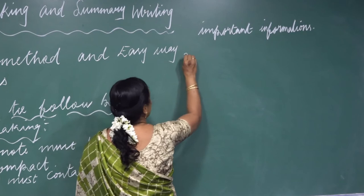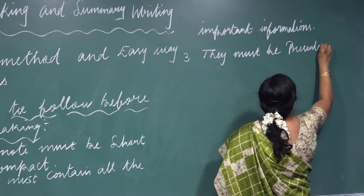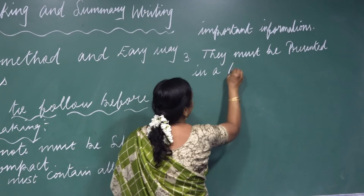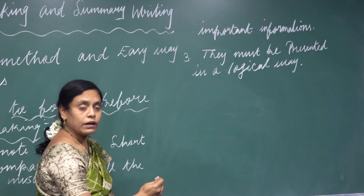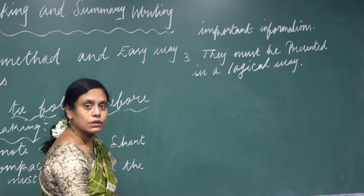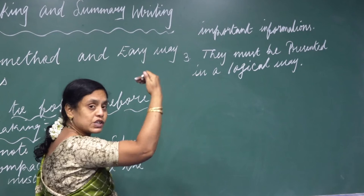The third point: notes must be presented in a logical way. Logical way means the sentences should not be skipped. You must follow the points one by one — the third sentence should not be written as the first, the fifth should not appear second. You follow first point, second point, third point in order. That is called a logical way.